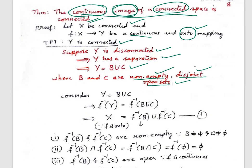Now, we know about x, so we take f-inverse on both sides. Since y equals b union c, taking f-inverse on both sides gives f-inverse of y equals f-inverse of b union f-inverse of c. Since f is an onto function, f-inverse of y is nothing but x. So x equals f-inverse(b) union f-inverse(c). Let us call this equation 1.